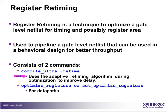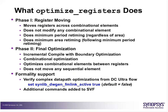There are two ways to do register retiming. First is compile extra -retiming, where the algorithm used by compile ultra does adaptive retiming during optimization to improve timing. Second is optimize_registers or set_optimize_registers, which is a very extensive retiming. Compile -retiming is basic retiming for general logic optimization; optimize_registers is used for very special cases of complex data paths. The recommendation is to use compile -retiming first.